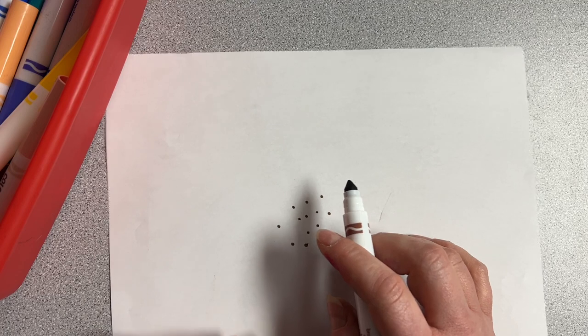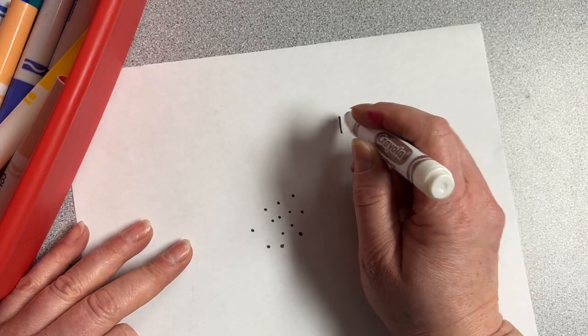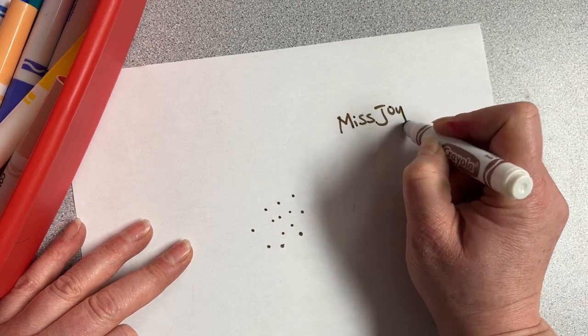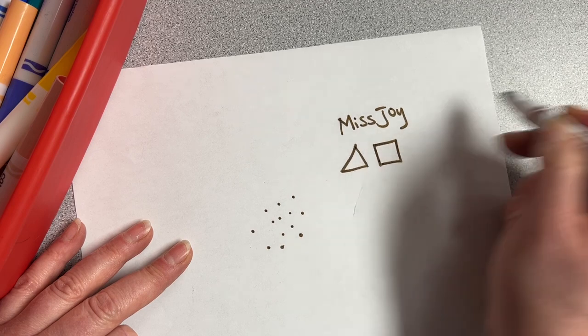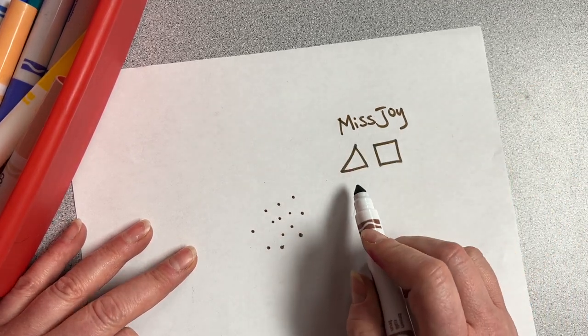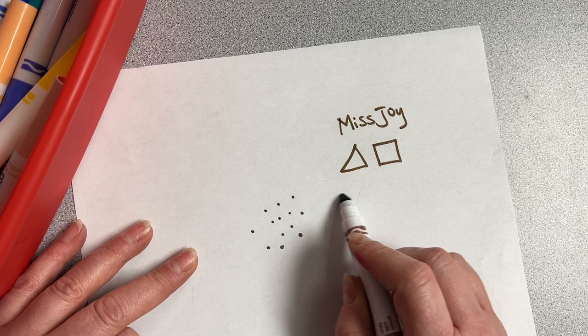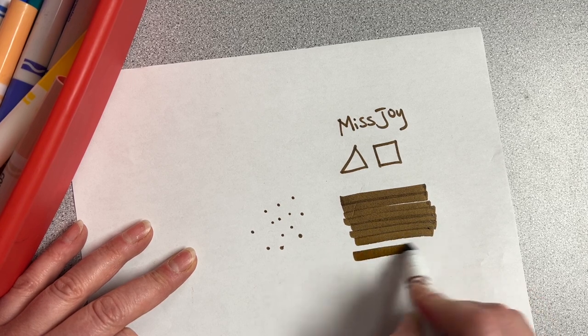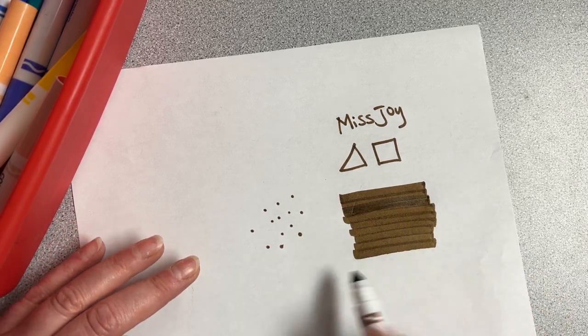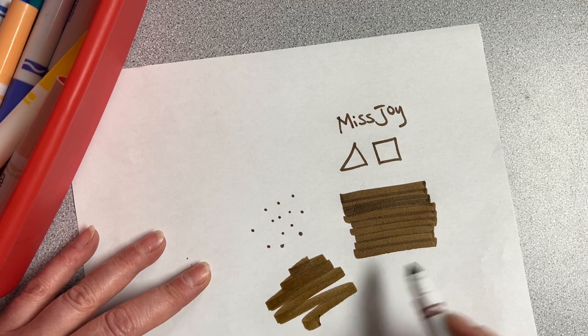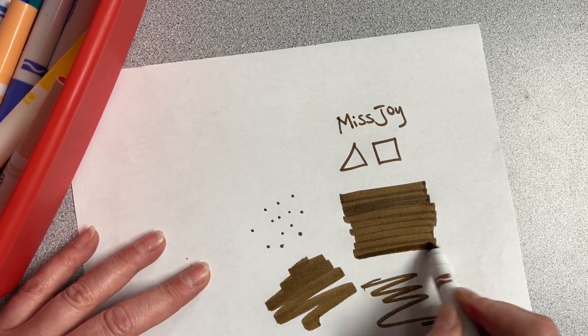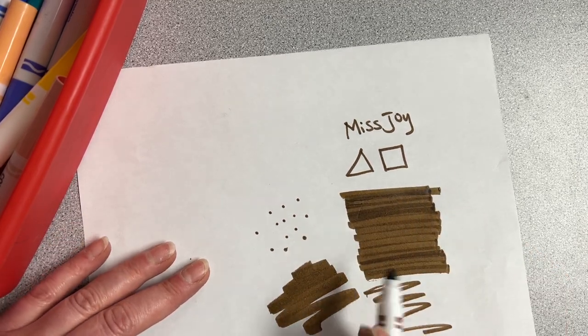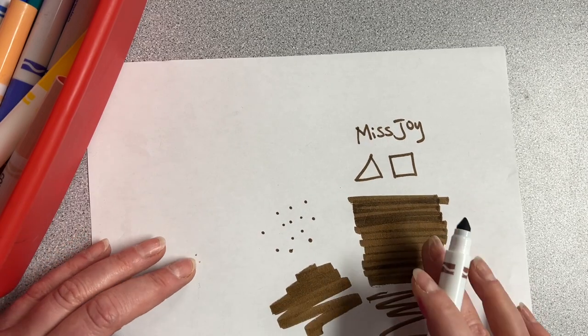When I'm using a marker, I can use the tippy top to make a letter, I could make my name, or to draw a shape. Or I could turn my marker flat on its side and use the broad side to make wide lines. And sometimes when I'm coloring in, instead of making a scribble, I can make long, controlled movements in a line, in a row, to make my coloring look really well done.